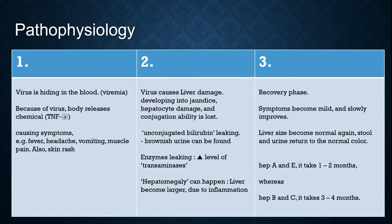In phase 2, the virus causes liver damage, developing into jaundice, hepatocyte damage, and the conjugation ability is lost. Unconjugated bilirubin leaks, and brownish urine can be found. Also, enzymes are leaking, so there is an increased level of transaminases found in the blood, and hepatomegaly may also occur.